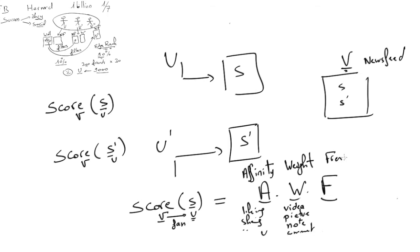The last element is the freshness. Basically, this is one over the age of the story. So if a story has been posted yesterday, it will have a lower F, freshness, than a story posted this morning. So this was step one of the explanation of the notion of score.